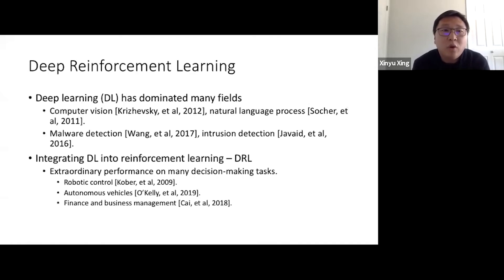Deep neural networks have dominated many fields, such as computer vision, natural language processing, and even cyber security.